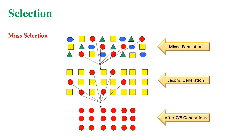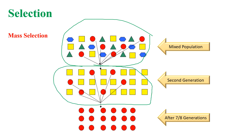In mass selection, seeds are collected from a mixed population. The collected seeds are then allowed to raise the second generation. This process is carried out for seven or eight generations. At the end, they will be multiplied and distributed to the farmers for cultivation. Mass selection is the simplest and least expensive method of plant breeding.